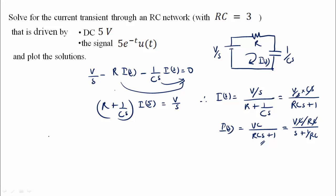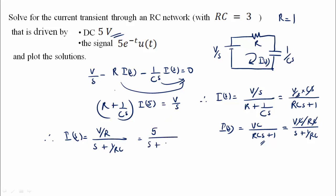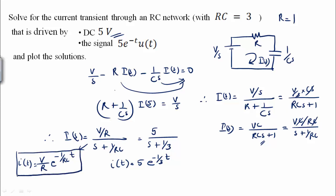So I of s is equal to V by R divided by s plus 1 by RC. With R equal to 1, V by R is 5, so I of s equals 5 divided by s plus 1 by 3. Taking the inverse Laplace transform, i of t equals 5 e raised to minus 1 by 3 times t. The general equation is i of t equals V by R times e raised to power minus t by RC.